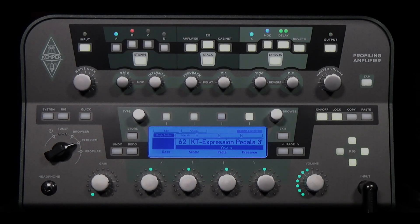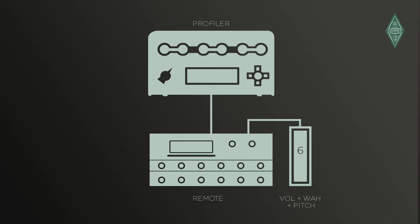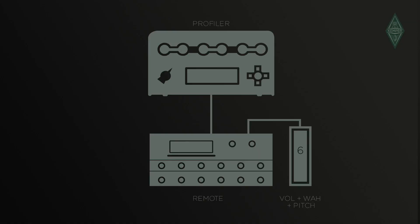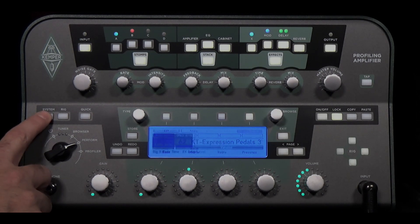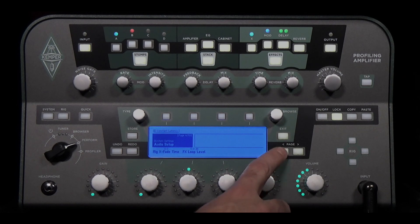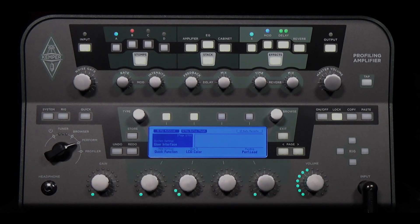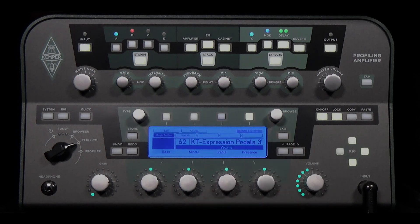This is the most economical solution. A single pedal controls the wah, volume, and pitch functions. The morph function is now controlled by the rig buttons on the remote. To do this, the morph function must be assigned to the rig buttons on the remote in the system menu. Press the system button and navigate to the user interface page. Rig button morph must be activated with soft button 2 — this is already the case in the factory default settings. Now you can control the morph function via the rig buttons.